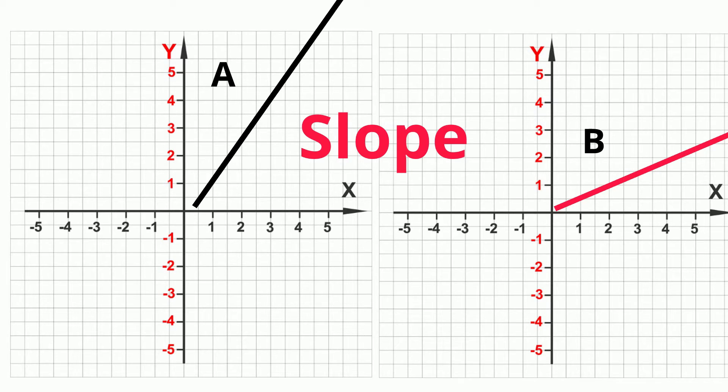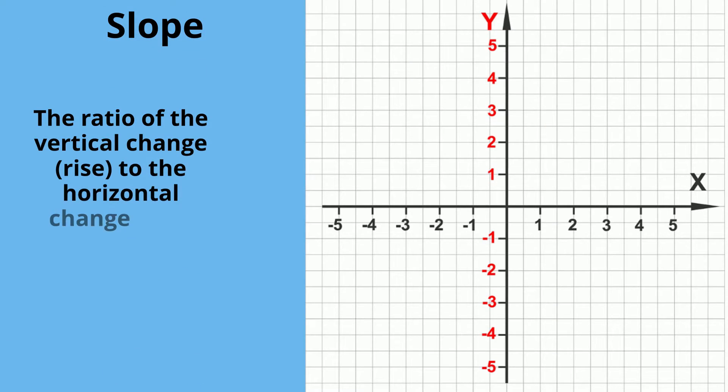It is defined as the ratio of the vertical change, called rise, and the horizontal change, called run.